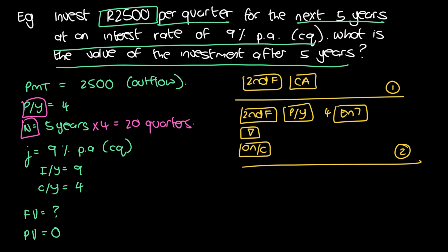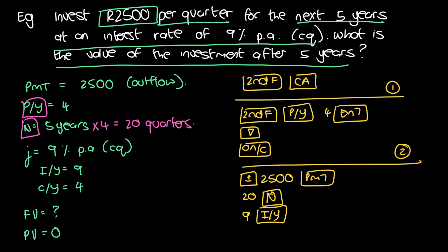Now we put in all the information. Payments are an outflow so they must be negative: enter negative 2500, then press PMT. Then enter 20 for N. Then enter 9 for I/Y. Our PV is zero — we don't have to input it because after clearing, the default value for PV is zero. Now we compute future value by pressing CPT then FV, and it gives us 62,278.80 rand.